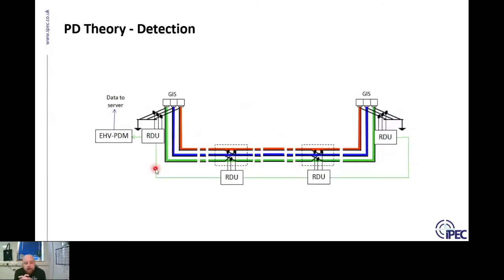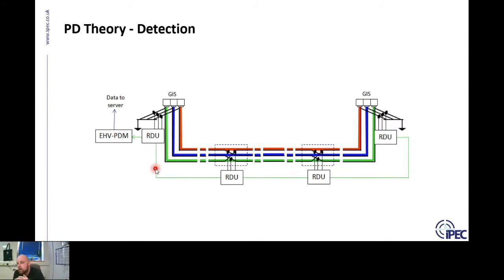People often ask how far along a cable a HFCT can detect PD. It varies and is a gray area — it depends on how large the PD is. A small PD in the early stages might not travel very far; a large PD or higher energy defect might travel much further. Depending on defect type and PD level, typically we say around four to five kilometres. In urban areas or poor earthing quality conditions that could be less; for subsea cables you can see much further.